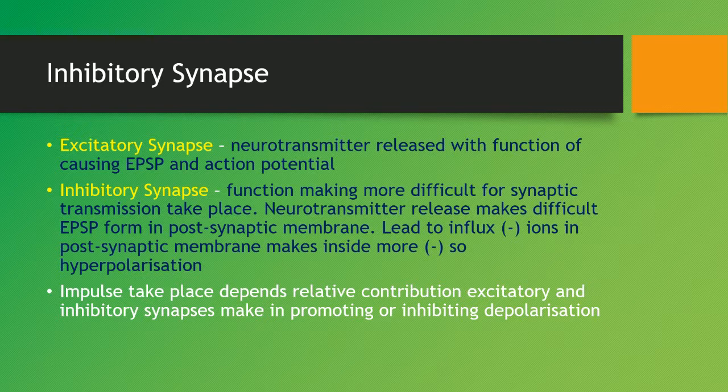There are different types of synapses: excitatory and inhibitory. An excitatory synapse is when the neurotransmitter is released with the function of causing an EPSP and an action potential. The inhibitory synapse has the function of making it more difficult for synaptic transmission to take place — it inhibits and prevents excitatory transmission from happening. The neurotransmitter released makes it difficult for an EPSP to form in the post-synaptic membrane, leading to an influx of negative ions into the post-synaptic membrane, making the inside more negative, meaning hyperpolarization will take place.